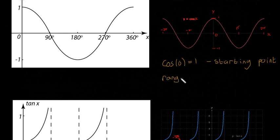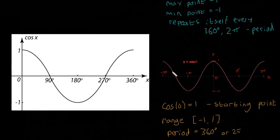And then I'm going to say the range, again, is minus 1 to 1. So it's similar to sine in that. And the period is the same, that it repeats itself every 360 degrees or 2 pi. So it repeats itself every 360 degrees or every 2 pi radians.